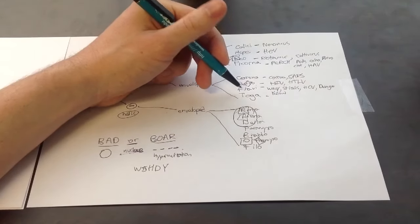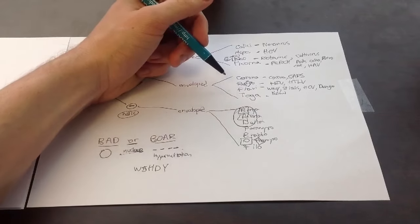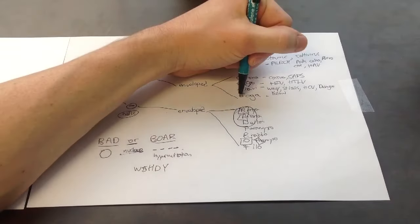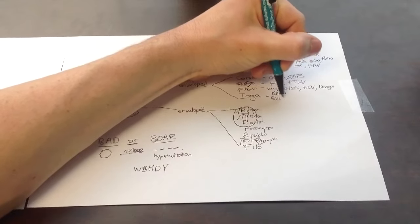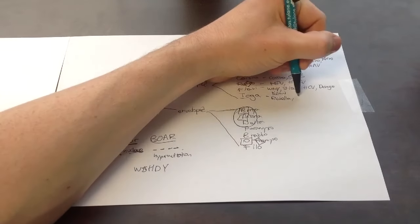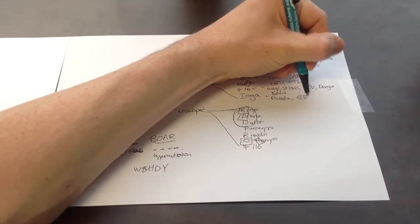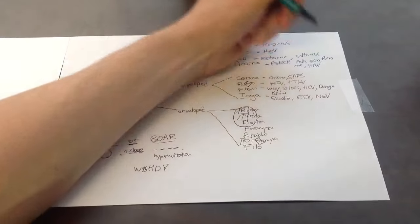And toga, I remember a beautiful girl riding in on her horse. And she's wearing a toga. So we have this rubella, beautiful in her toga. And she's coming in on a horse. So we have Eastern equine virus and Western equine virus.